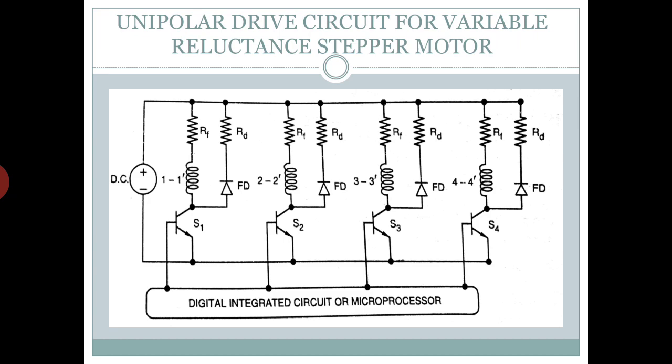The switching is done by pulses given by a digital integrated circuit or a microprocessor with an appropriate program loaded in it. As shown in the figure, a high value resistance Rf, known as forcing resistance, is connected in series with each phase winding so as to give a short rise time for the current to reach its desired value. A freewheeling diode along with a high value resistance Rd is connected in series with it for dissipating the energy stored in the inductive winding in the shortest period, minimizing the time for current to drop to zero.